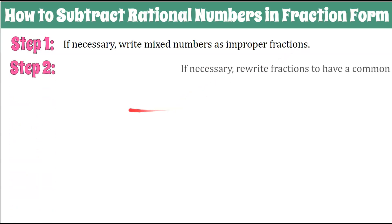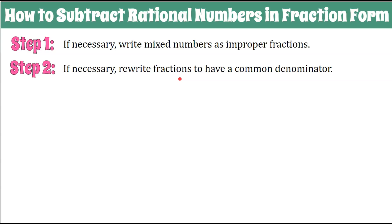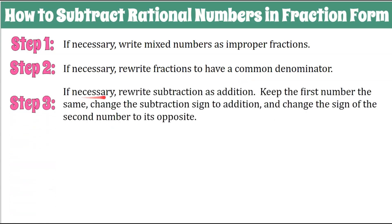Step 2: if necessary, we're going to rewrite fractions to have a common denominator. When you add and subtract, this is a must. Step 3: if necessary, we're going to rewrite the subtraction as addition — keep the first number the same, change the subtraction sign to addition, and change the sign of the second number to its opposite. All the problems in this video, we will do this rule because it's all going to be subtraction.